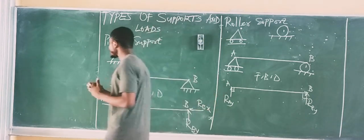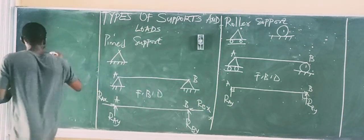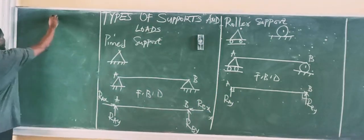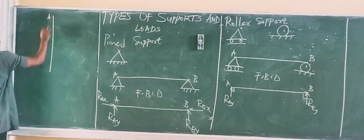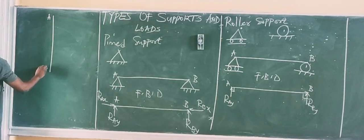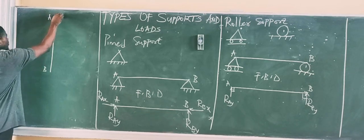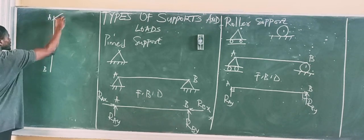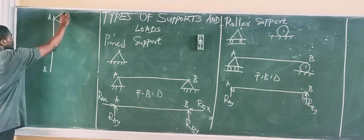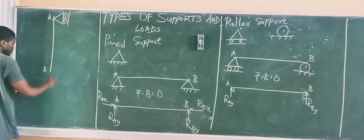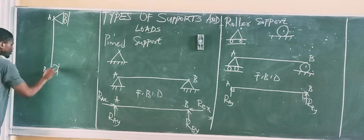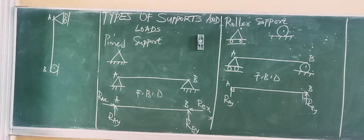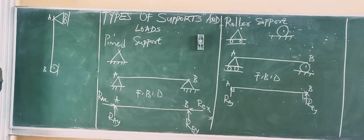For instance, if I have a vertical beam with point A at the top and point B at the bottom, and we have a roller at point A and also at point B, then the reactions are going to change. Because of the roller, we always have a reaction normal to the surface.